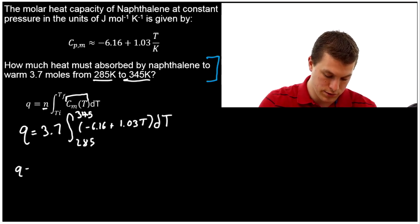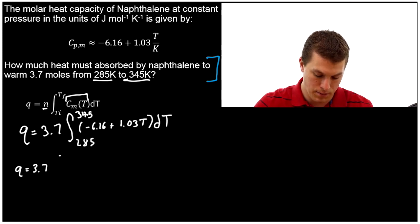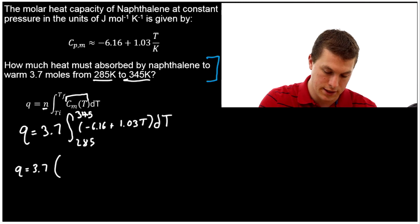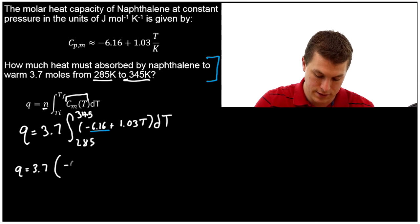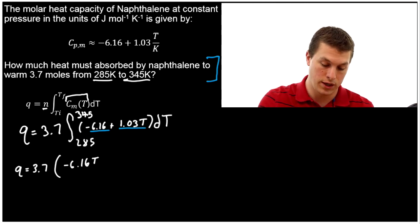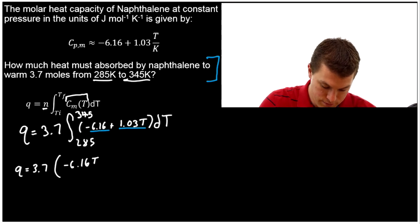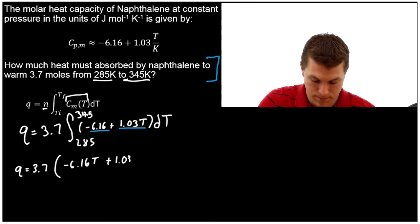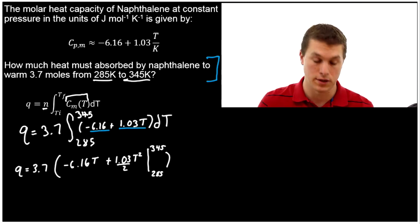And so let's go ahead and evaluate that integral. So we're going to get q = 3.7 and then parentheses. Our -6.16 just gains a T, so that guy just gains a T: -6.16T. And then this guy, it's 1.03T, so it becomes 1.03 T squared over 2. And what we're going to do then is evaluate this guy from 285 to 345. And then we're going to multiply that all by 3.7. That's our moles.